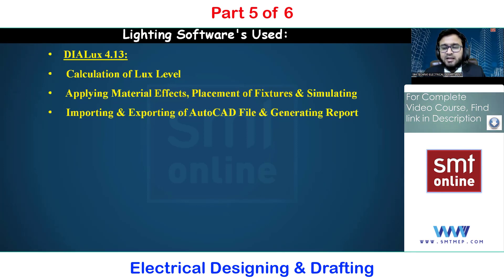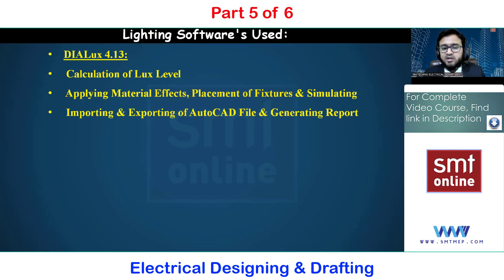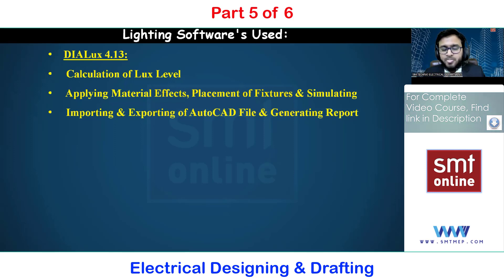In the lighting calculations there is a parameter called CUF — the Coefficient of Utilization Factor. This factor tells us how much light is going to be absorbed and how much is going to be reflected, so based on that we can exactly find out the number of lighting fixtures required.